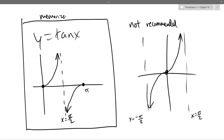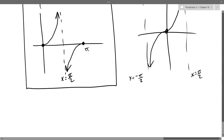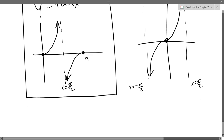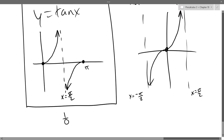Cotangent is the last trig function we're going to look at. Instead of plotting points, we're going to take the tangent graph and reciprocate it. The x-intercepts turn into vertical asymptotes, and the vertical asymptote from the one-over-zero value becomes zero over one, giving us an x-intercept. The only points that stay the same are one and negative one, which happen at π/4 and 3π/4.